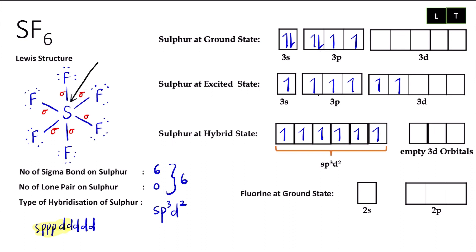Next, we have fluorine at ground state. For SF₆, its type of hybridization is sp3d2, but for fluorine we know it has 1 sigma and 3 lone pairs — so 4 of them, making it sp3. As I mentioned before, we don't need to show the hybridization process for terminal atoms — just use the ground state. That is why fluorine has 7 valence electrons in period two.